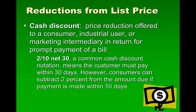There are several options for reductions from the list price. One option is a cash discount — a price reduction offered to a consumer, industrial user, or marketing intermediary in return for prompt payment of a bill. Commonly seen on an invoice is the term 2/10 net 30, meaning the customer must pay within 30 days. However, the consumer can subtract a 2% discount if payment is made within 10 days.